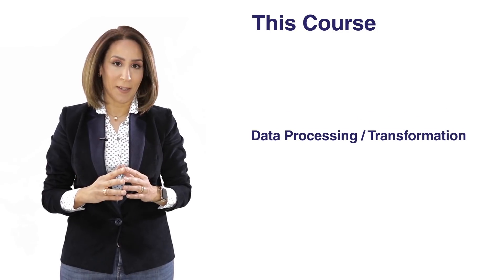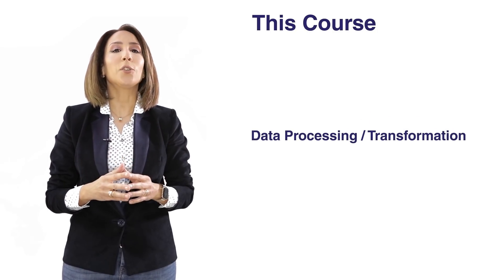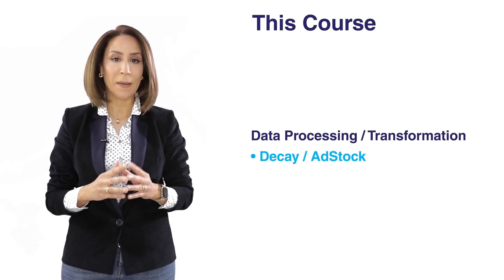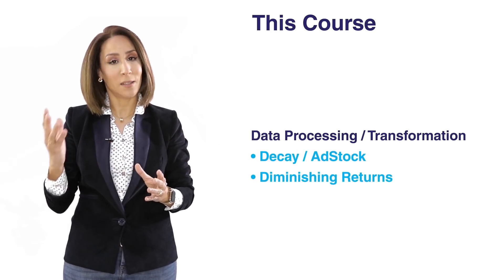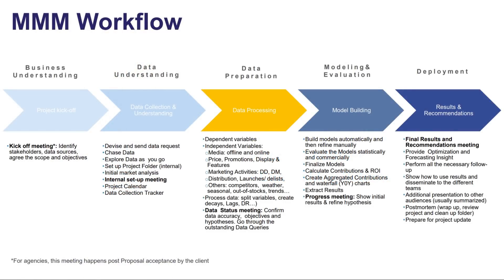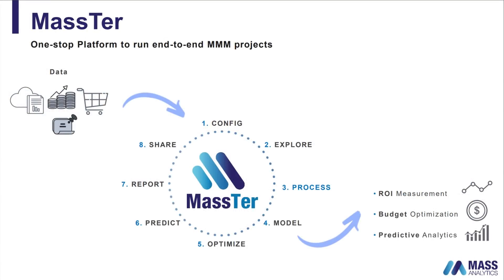In this course, we will talk about data processing, but with a specific zoom onto the transformations that are specific to media variables, mainly decay or ad stock transformation and diminishing returns. If you remember, in Season 1 Episode 5, we talked about the fact that there are different variables that need to be transformed before we ingest them into the model. In the software, data processing is performed in the third module. Here you can find all the transformations you need to apply to your data, including the media transformations we'll be covering today: decay or ad stock and diminishing returns.